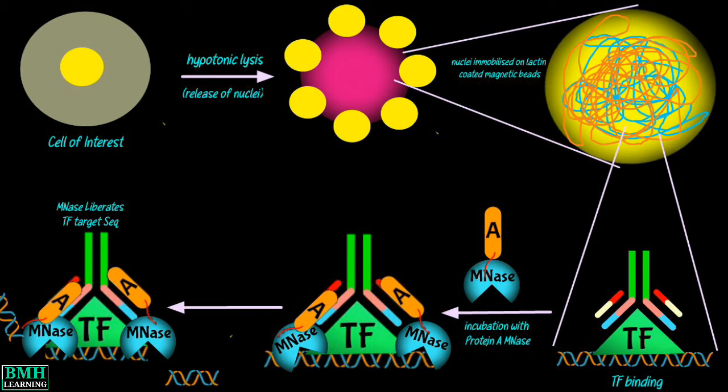The complex is then cleaved using inducible pA-MNase, that is Protein A fused to MNase. DNA can be cleaved into small DNA fragments by MNase at antibody binding sites. When the chromatin fragments are liberated into the supernatant, the DNA fragments can be extracted from the supernatant for further sequencing.